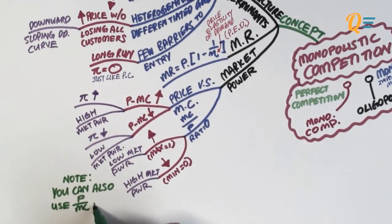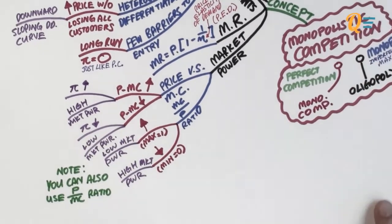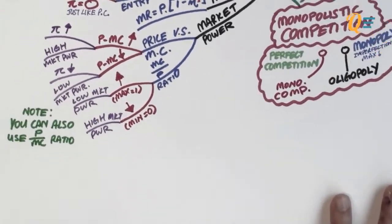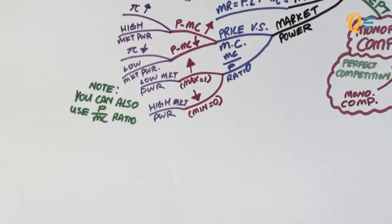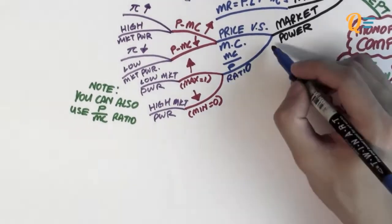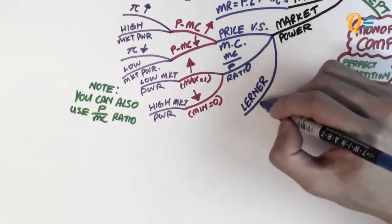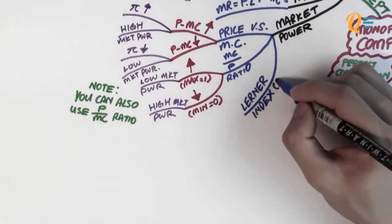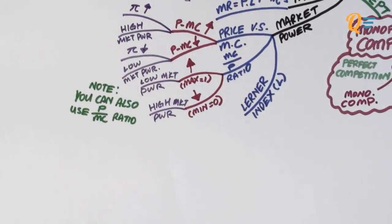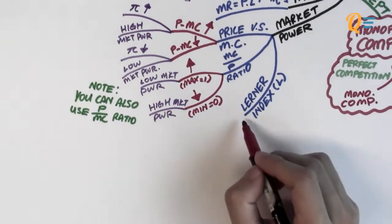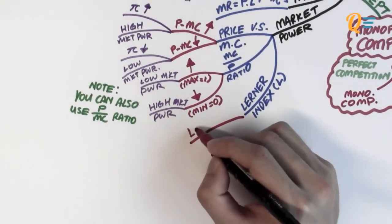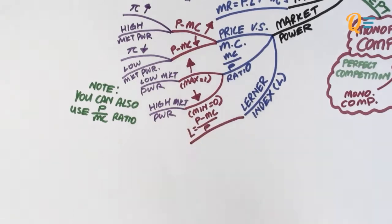Please note that you can also use the price to marginal cost ratio — if you use P over MC, then your analysis will go in the opposite direction. Now let me introduce a more formal way of measuring market power, which is called the Lerner's Index. The Lerner's Index is another way to measure market power.